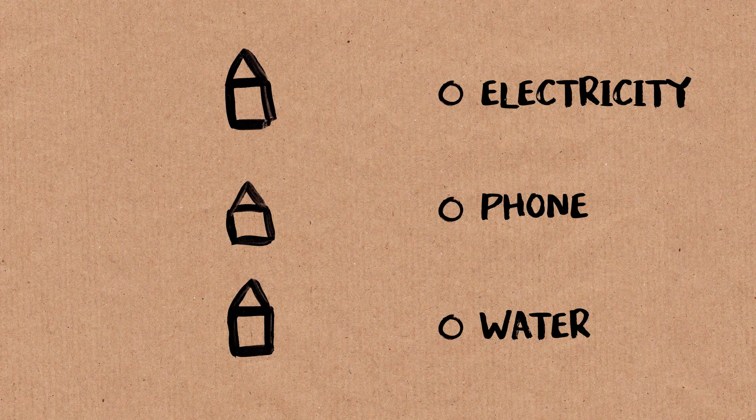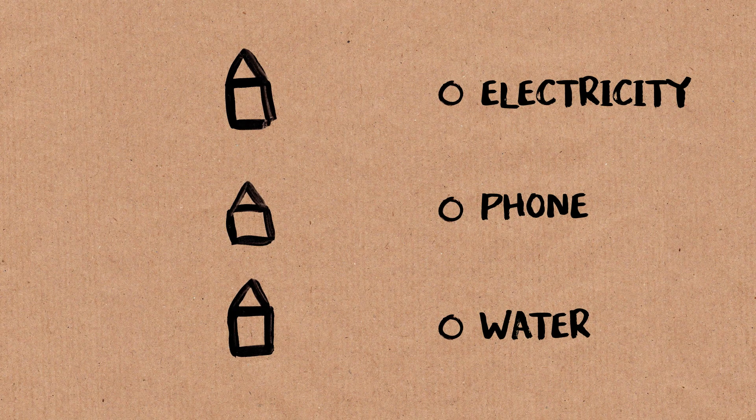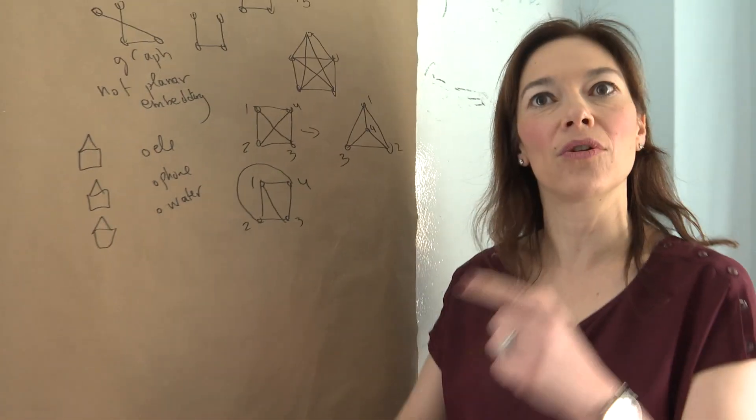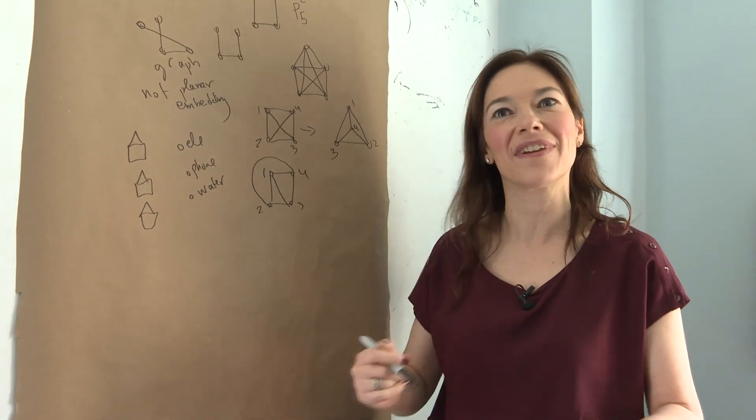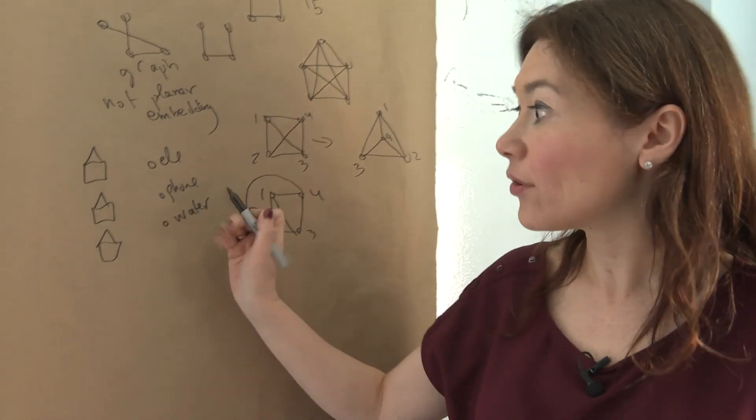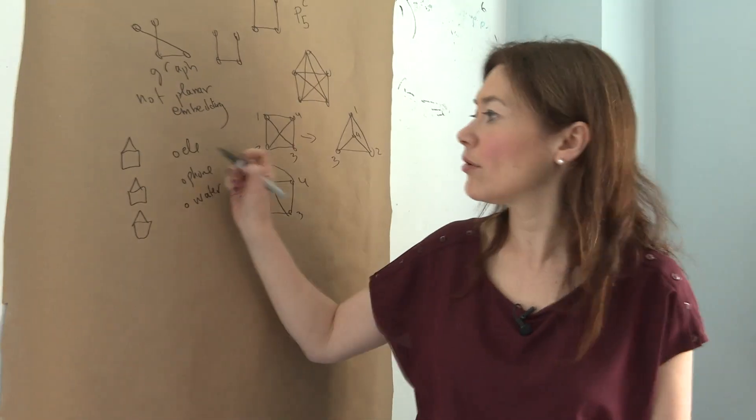You want to put lines between the utilities and the houses. You want to put power lines and phone lines and water pipes. And it's important that they don't intersect each other so that you can fix them independently or some other story along these lines. And so the question is, can you? And so you can try. You can maybe connect this one like that.